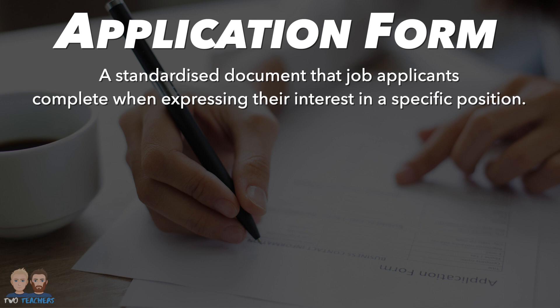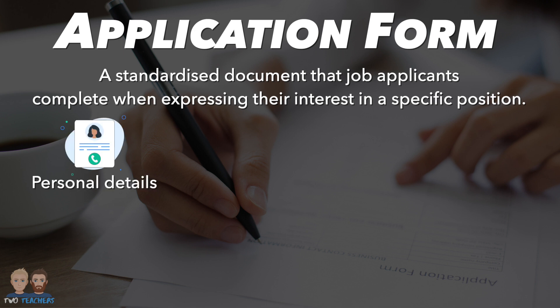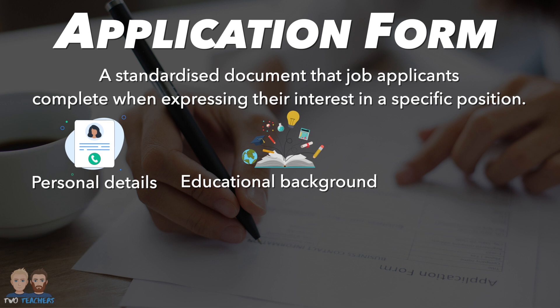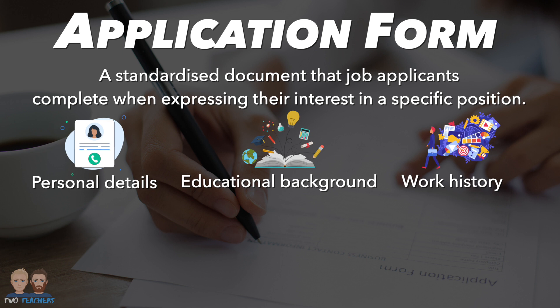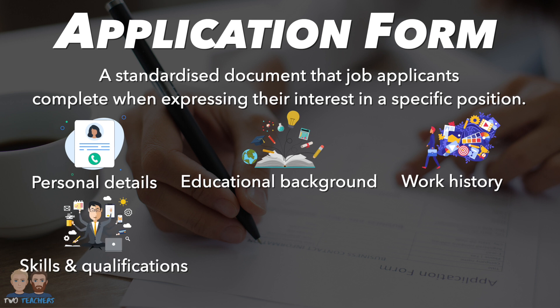An application form is a standardised document that job applicants complete when expressing their interest in a specific position. It is a structured way for the organisation to gather essential information about applicants, ensuring that all necessary details are provided consistently. Typically, an application form includes personal details such as name, contact information, and sometimes demographic data for equal opportunity monitoring; educational background including institutions attended, qualifications earned, and graduation dates; and a detailed account of work history including past employers, job titles, dates of employment, and job responsibilities. There is also a skills and qualifications section requiring applicants to list relevant skills, certifications, and qualifications that make them suitable for the position.